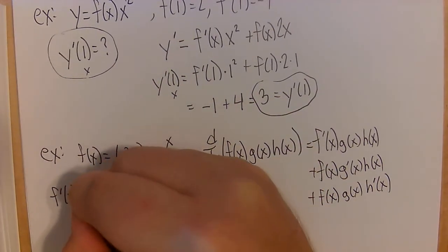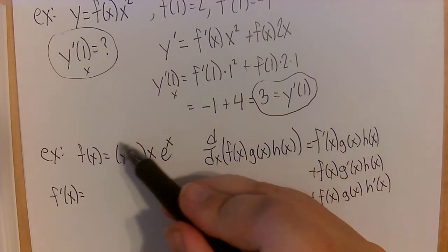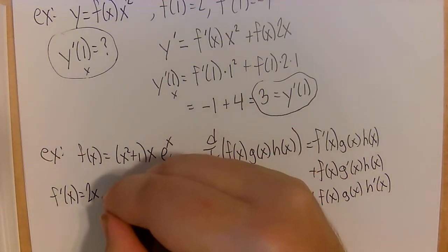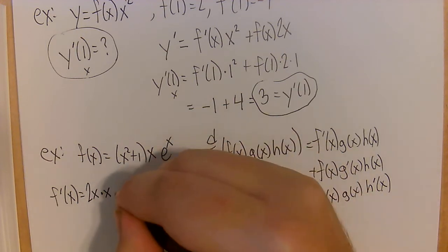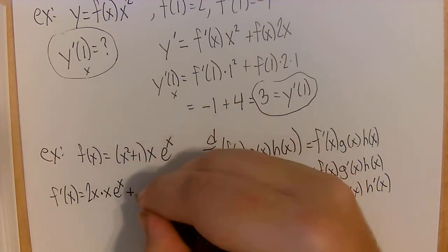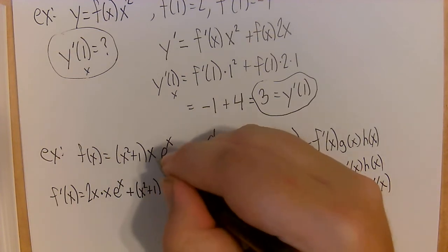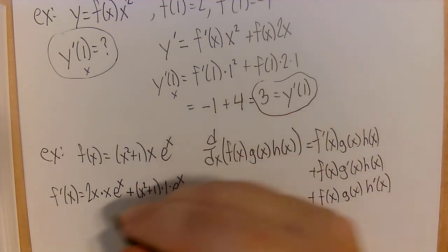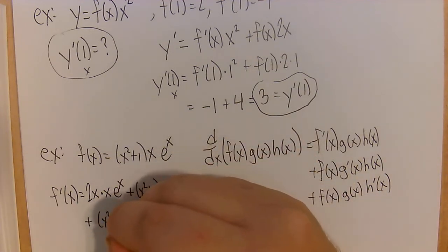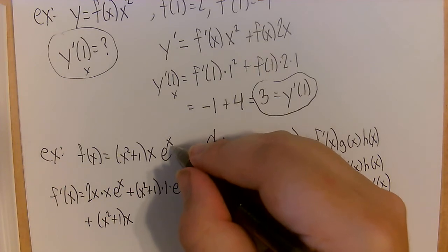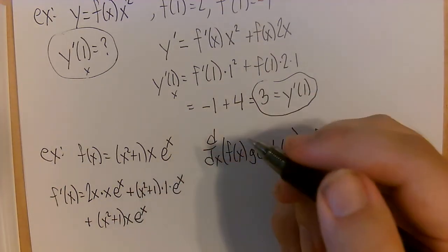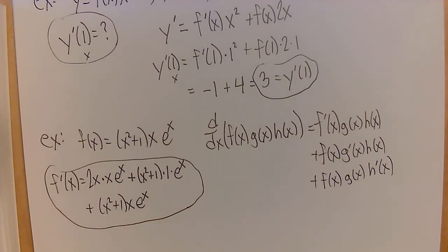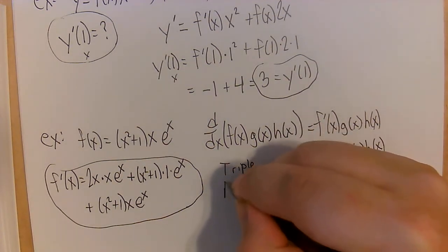Applying this to f of x equals (x squared plus 1) times x times e to the x: first, the derivative of (x squared plus 1) is 2x, leaving x times e to the x alone; then leave (x squared plus 1) alone, the derivative of x is 1, leaving e to the x alone; finally leave the first two alone and the derivative of e to the x is e to the x. So we get 2x times x times e to the x plus (x squared plus 1) times e to the x plus (x squared plus 1) times x times e to the x.